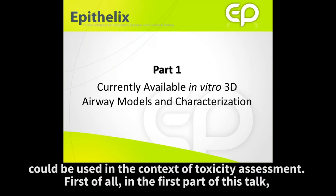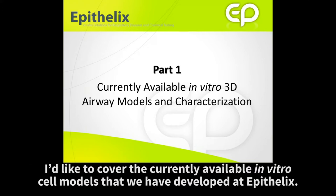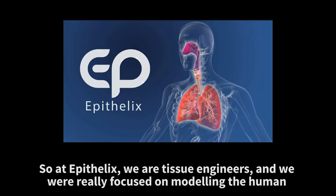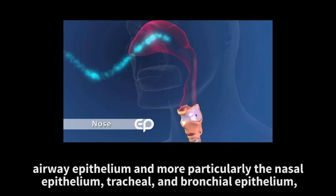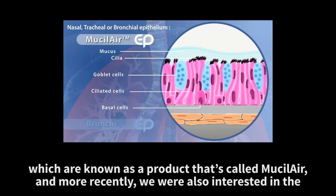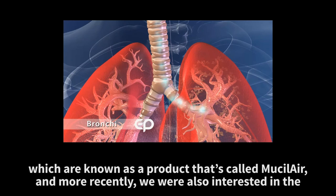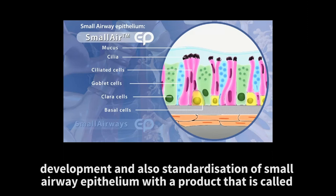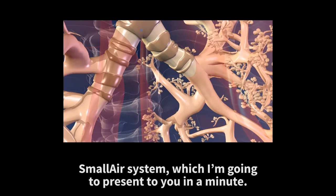In the first part of this talk, I'd like to cover the currently available in vitro cell models that we have developed at Epithelix. At Epithelix, we are tissue engineers, and we were really focused on modeling human airway epithelium, and more particularly the nasal epithelium, tracheal and bronchial epithelium, known as a product called MucilAir. And more recently, we were also interested in development and standardizations of small airway epithelium with a product called SmallAir, which I'm going to present in a minute.